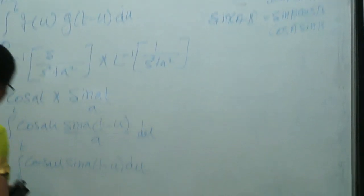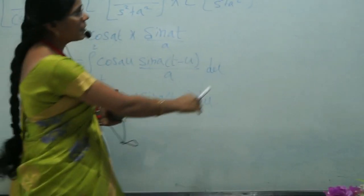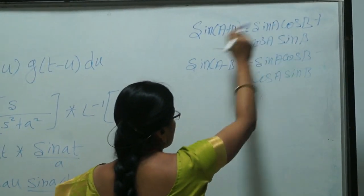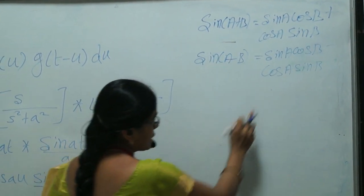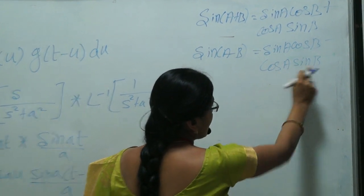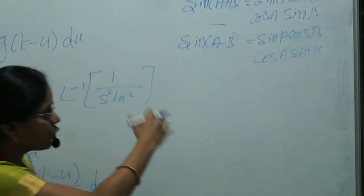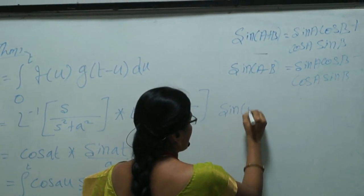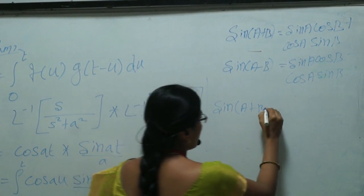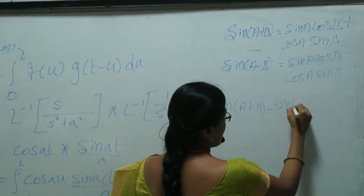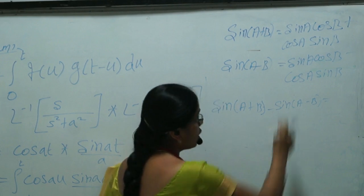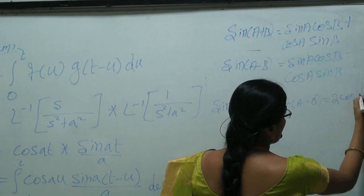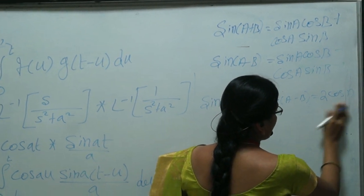We want cos A sin B. From the subtraction formula: sin(A+B) − sin(A−B) = 2 cos A sin B. So the expression becomes 1/(2a) times the integral from 0 to t of [sin(au + a(t−u)) − sin(au − a(t−u))] du.